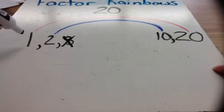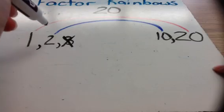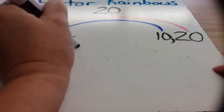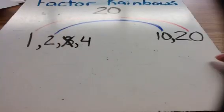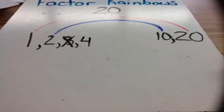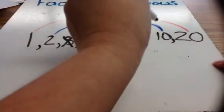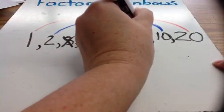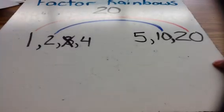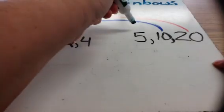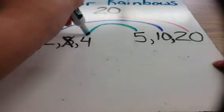So I go back to my left, and I'm counting. Now I have 1, 2, 3, 4. I ask myself, is there anything times 4 that equals 20? Yes, 5. 4 times 5 equals 20. So I will connect those with a rainbow. 4 times 5 equals 20.